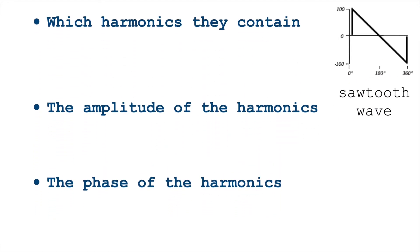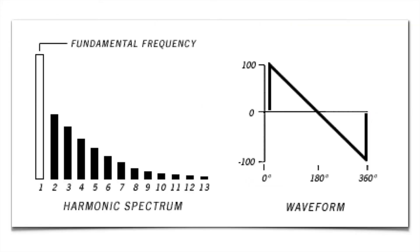Starting with the sawtooth wave, the sawtooth wave contains all harmonics. The amplitude of those harmonics is one over the harmonic number. So the second harmonic is half the amplitude of the fundamental. The third harmonic is a third, and so forth.